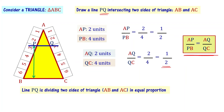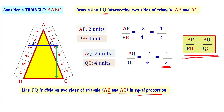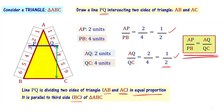Line PQ is dividing two sides of the triangle AB and AC in equal proportion — that's what we have seen here: 1 by 2 and 1 by 2. And we have seen that line PQ is parallel to side BC, which is the third side of triangle ABC.